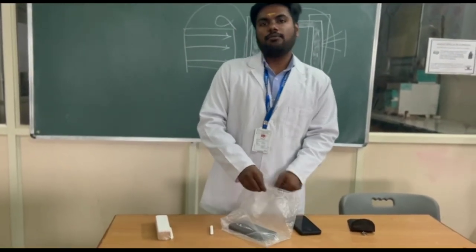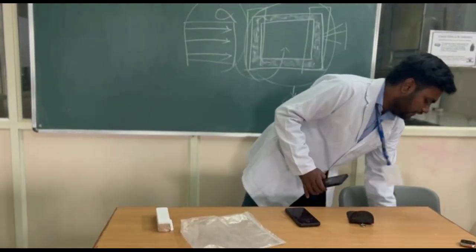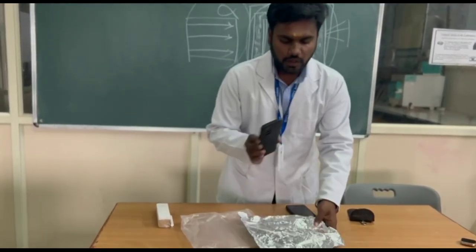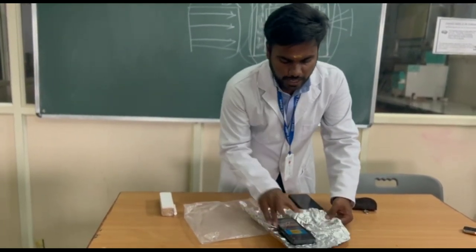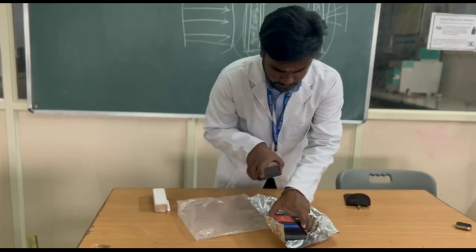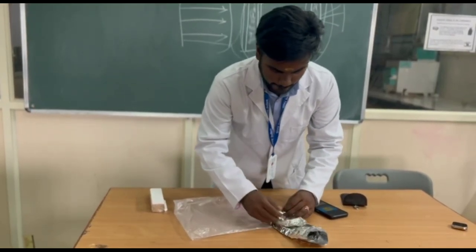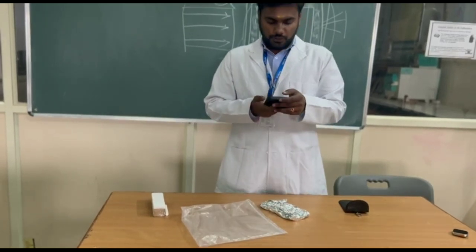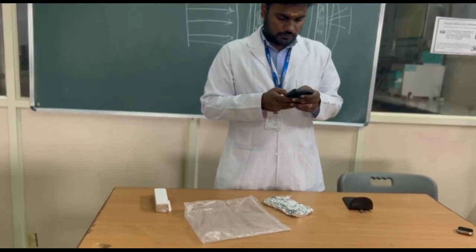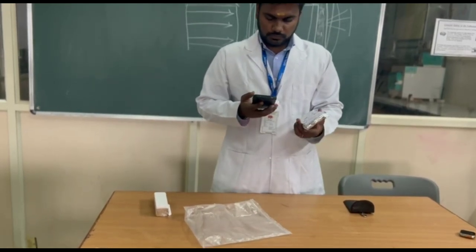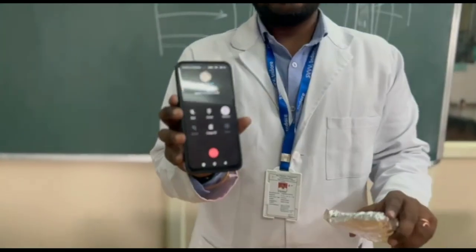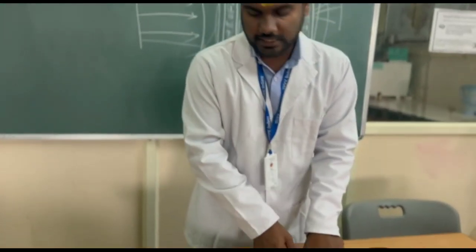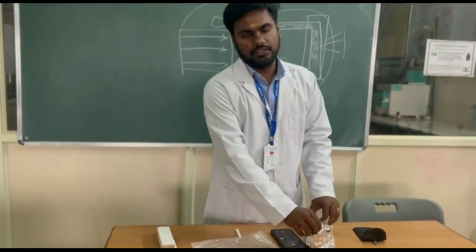Now let's try with the Faraday cage concept. As Michael Faraday said, when we cover a particular object with a metallic sheet — I have taken an aluminium foil. Even now the phone has been ringing, I am placing it inside and packing phone 1 completely. I am trying to call and even though phone 1 is wrapped, we can't get the sound of phone 2 ringing. This proves that a metallic layer stops the RF frequency.